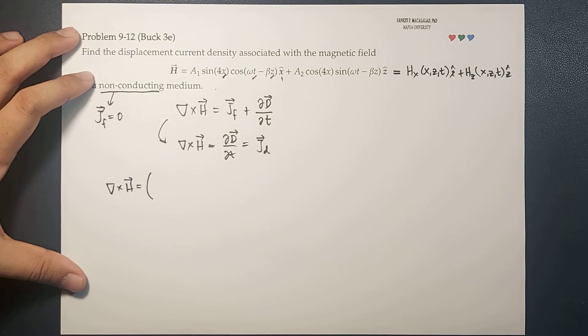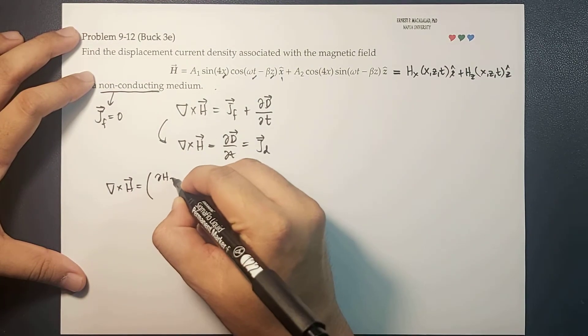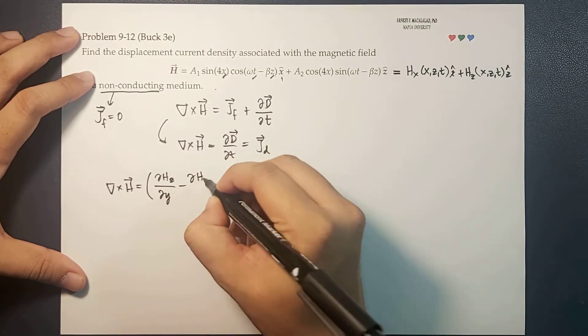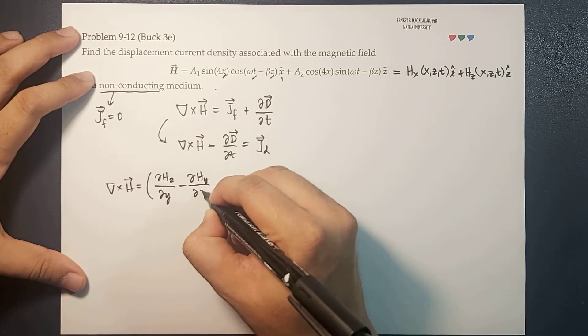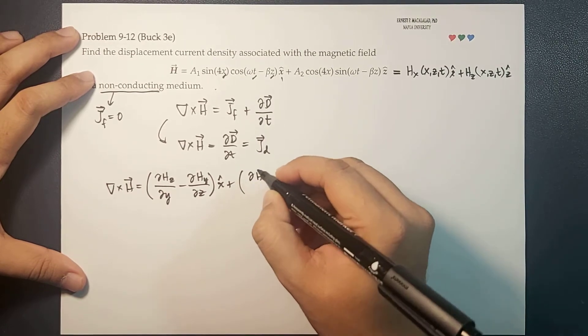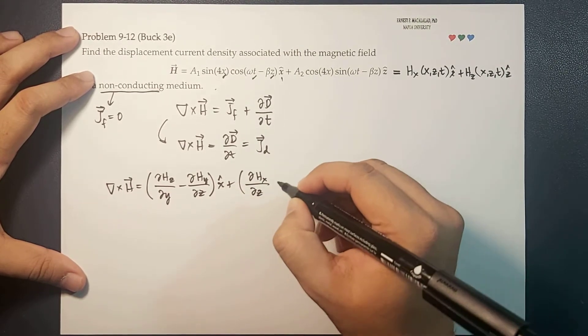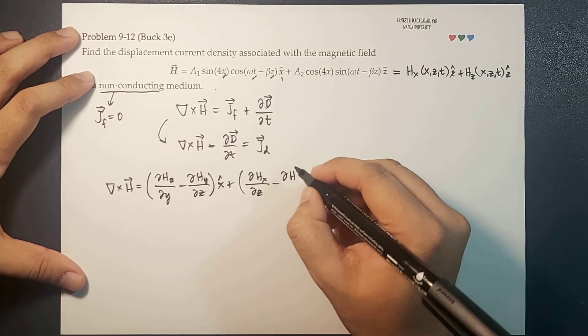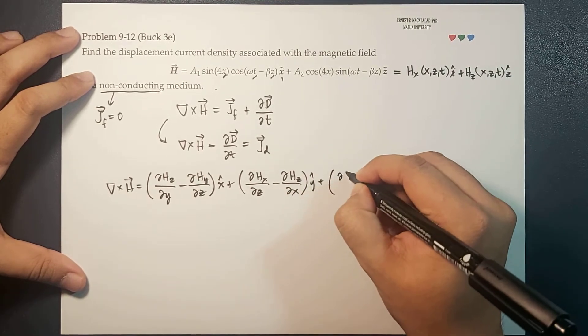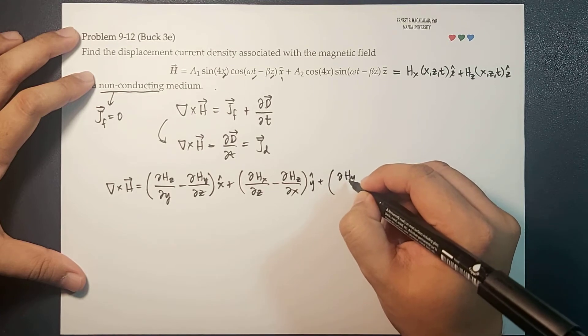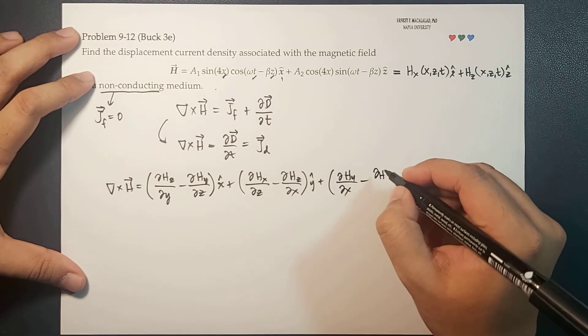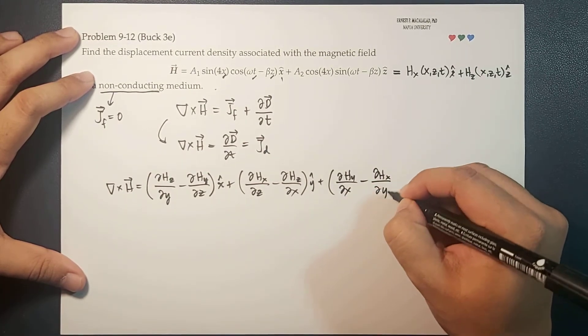coordinate system, the curl is: derivative of the Z component of H with respect to y minus derivative of the Y component with respect to z, times x-hat, plus derivative of the X component with respect to z minus derivative of the Z component with respect to x, times y-hat, plus derivative of the Y component with respect to x minus derivative of the X component